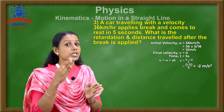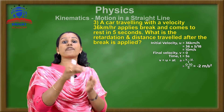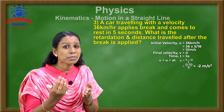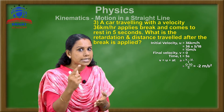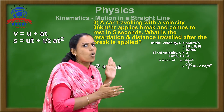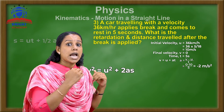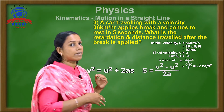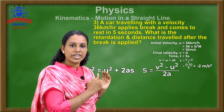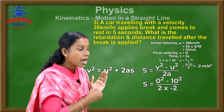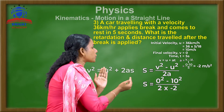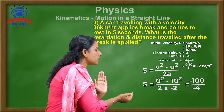Now for the second part: what is the distance traveled after the brake is applied in 5 seconds? We need the displacement S. We have v, u, and a — so we use the third equation: S = (v² − u²) / 2a. Substituting: S = (0² − 10²) / (2 × −2) = −100 / −4 = 25 meters.